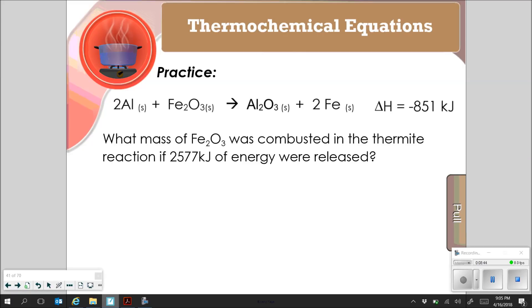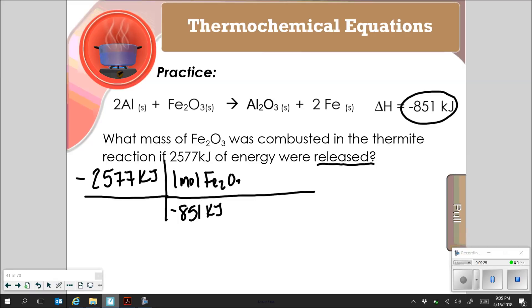In the second example, it says what mass of the iron 3 oxide was combusted in the thermite reaction if 2577 kilojoules of energy is released. So I've got my energy. I'm going to use that as my starting point. I've got my energy right up here. So I've got negative 851 kilojoules. And this should also actually be negative because it was released. So negative 851 kilojoules for every one mole of my iron 3 oxide in this case. Make sure you note that up there at the top of my balanced chemical equation.